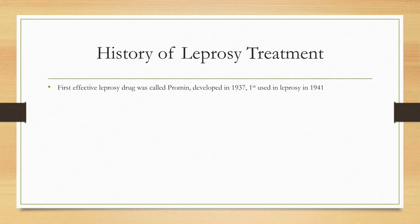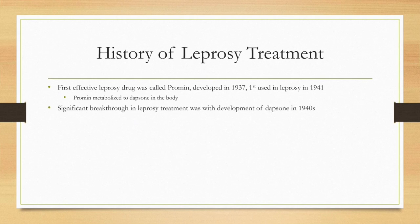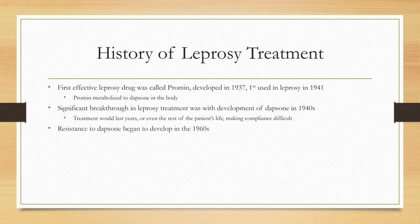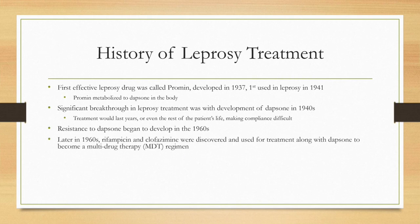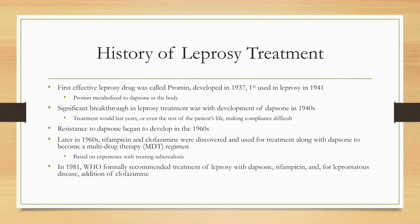The history of leprosy treatments: the first effective drug was Promin in 1937, first used on leprosy in 1941, metabolized to dapsone. A significant breakthrough was with the development of dapsone itself in the 1940s, though treatment lasted years or the rest of the patient's life, making compliance difficult. Resistance developed, leading to other drugs — in the 1960s, rifampicin and clofazimine — which became a multi-drug therapy regimen based on experience with treating tuberculosis. In 1981, multi-drug therapy was recommended and provided free of cost.